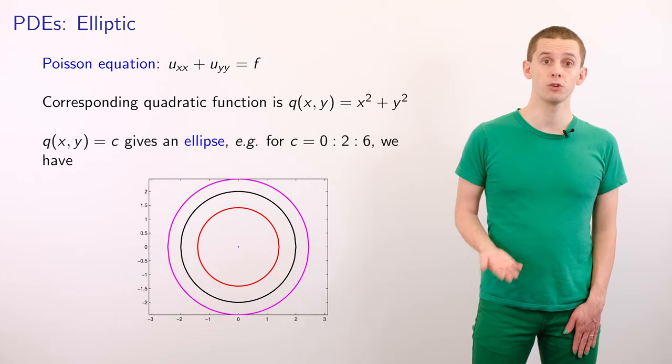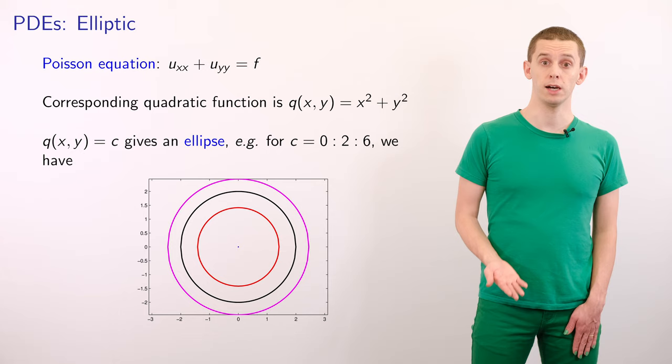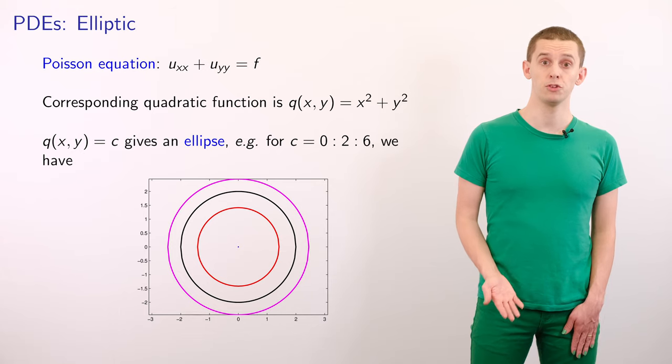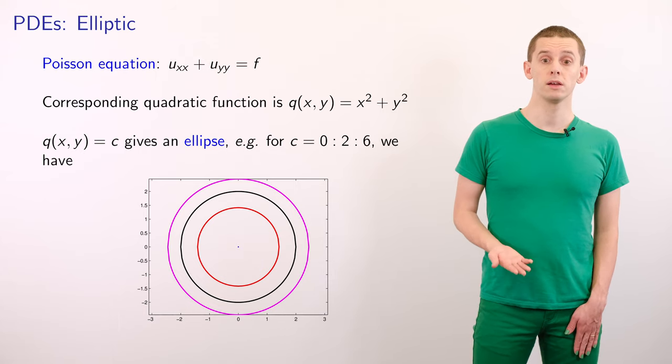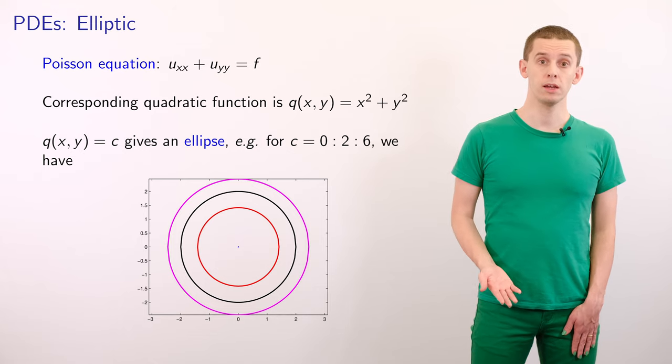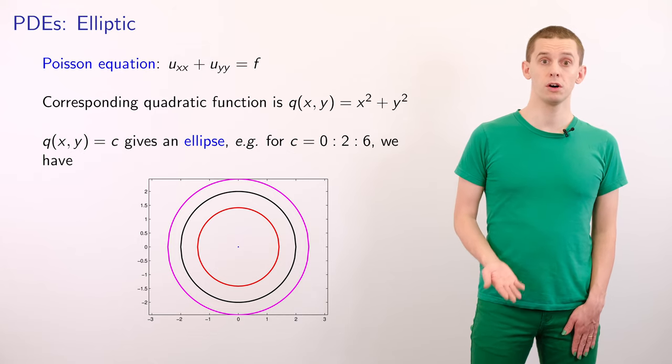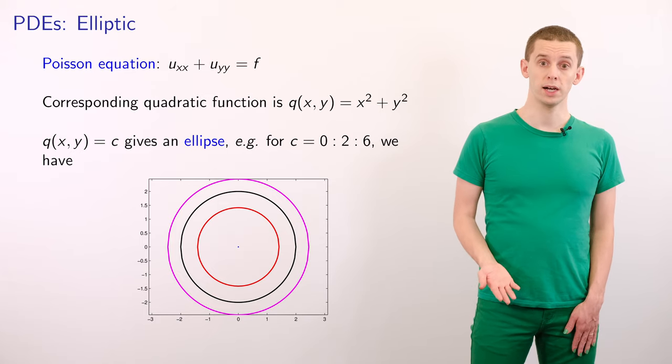Finally, let's look at our prototypical elliptic PDE, the Poisson equation. And we have u_xx plus u_yy is equal to f. And so our corresponding quadratic function will be q of x and y is equal to x² plus y². And in this case, if we look at constant q of x and y, then we'll have ellipses.